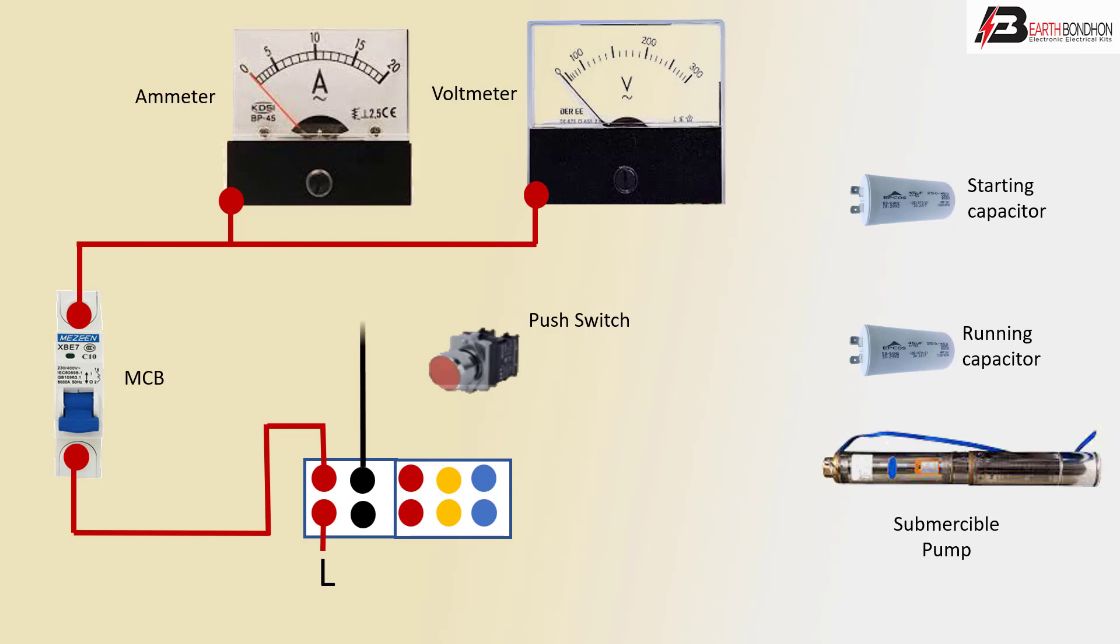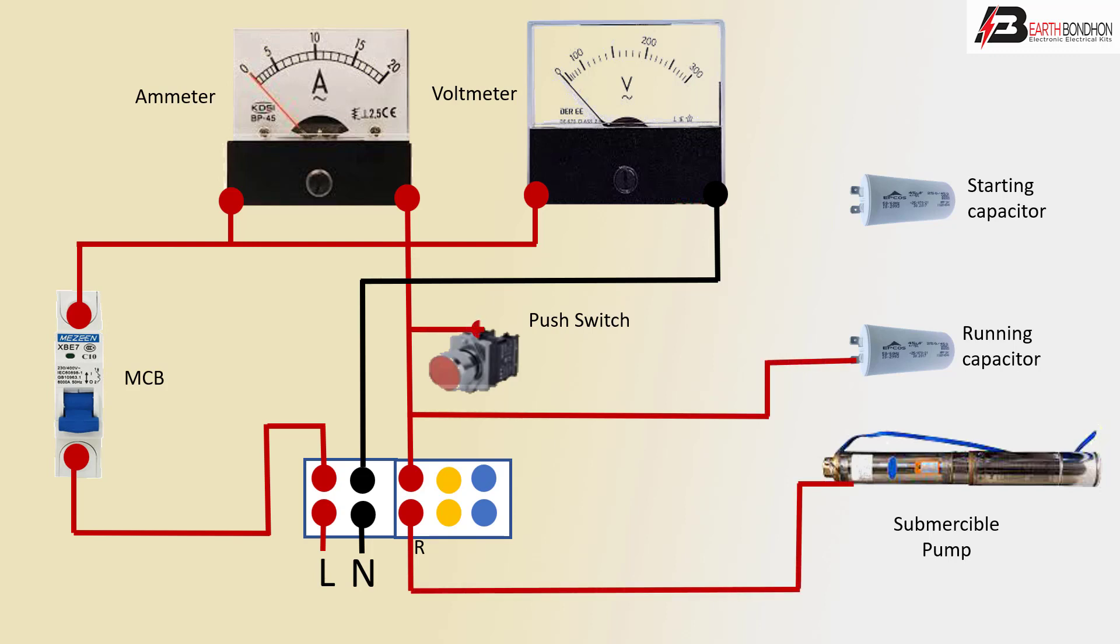Voltmeter connection and neutral to voltmeter negative line. Third, ampere meter output the positive line. Now going to R means running capacitor input and push switch input. Push switch output to the capacitor line.